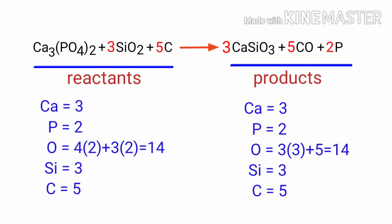The equation is now balanced. There are 3 calcium atoms, 2 phosphorus atoms, 14 oxygen atoms, 3 silicon atoms, and 5 carbon atoms on both sides.